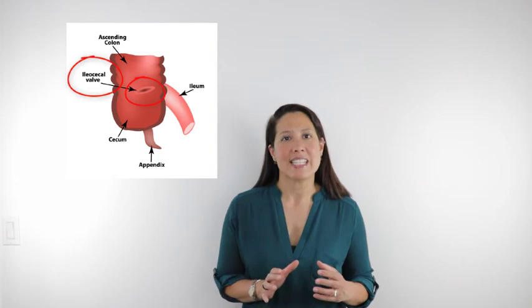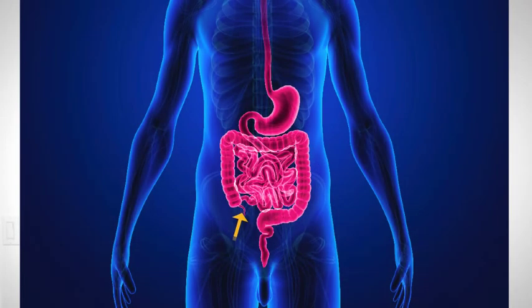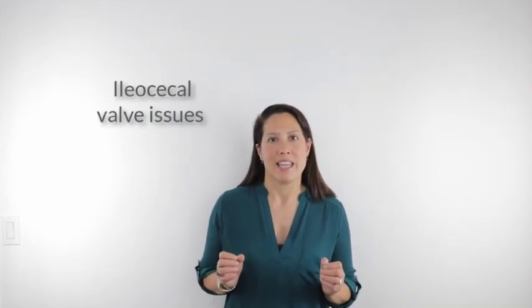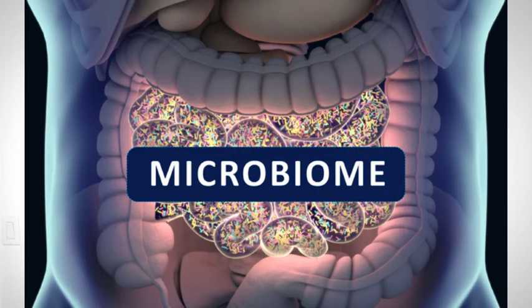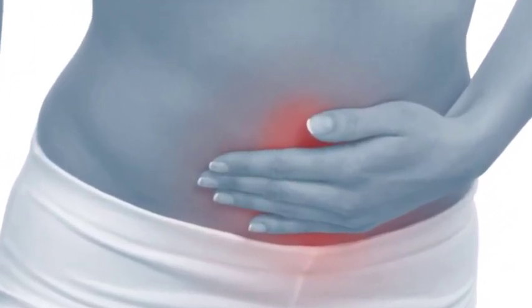Another contributing factor to SIBO involves a valve called the ileocecal valve. It's a valve between the end of the small intestines and the beginning of the large intestines, and it should open and let the food bolus move into the large intestines, and then that valve should close again. If that valve is not working effectively, it can open and bacteria that should just reside in the large intestines can move into the small intestines, contributing to that SIBO picture — that overgrowth of the wrong bacteria within those small intestines.